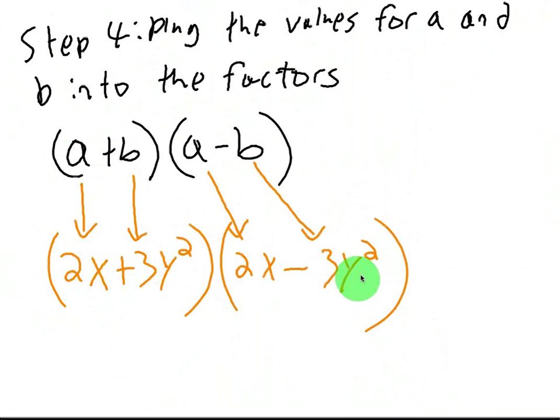So that's where the factorization comes from. So your fourth step is pretty obvious. Once you write the formula out, you can just plug in what you figured out for A and B. So we got 2X for A. We got 3Y squared for B. And we can just plug that stuff in. Wherever there's an A, I'm plugging in 2X. And wherever there's a B, I'm plugging in 3Y squared. And that finishes the problem.